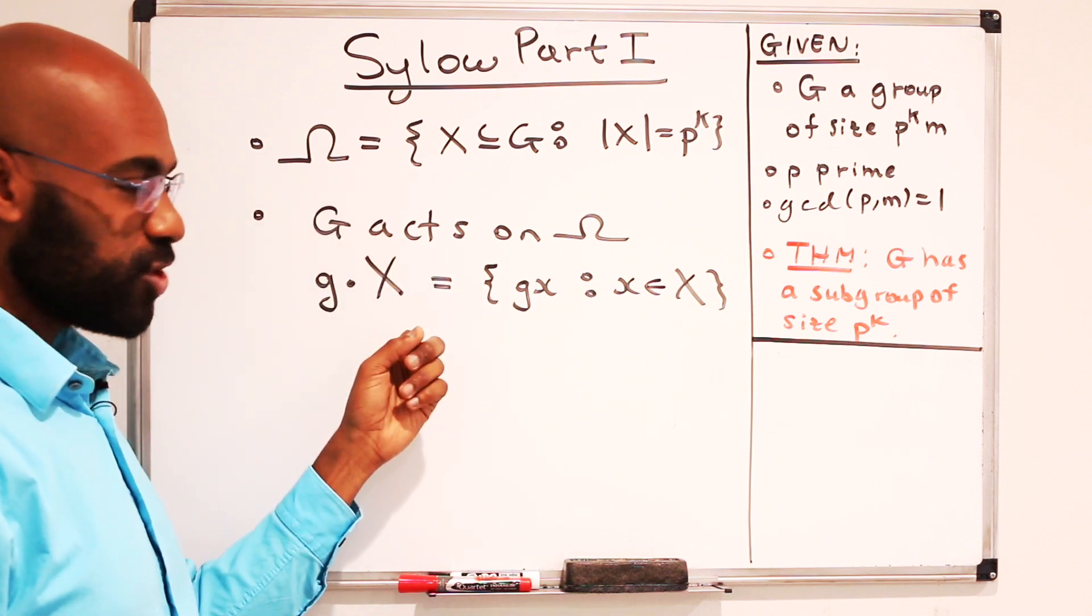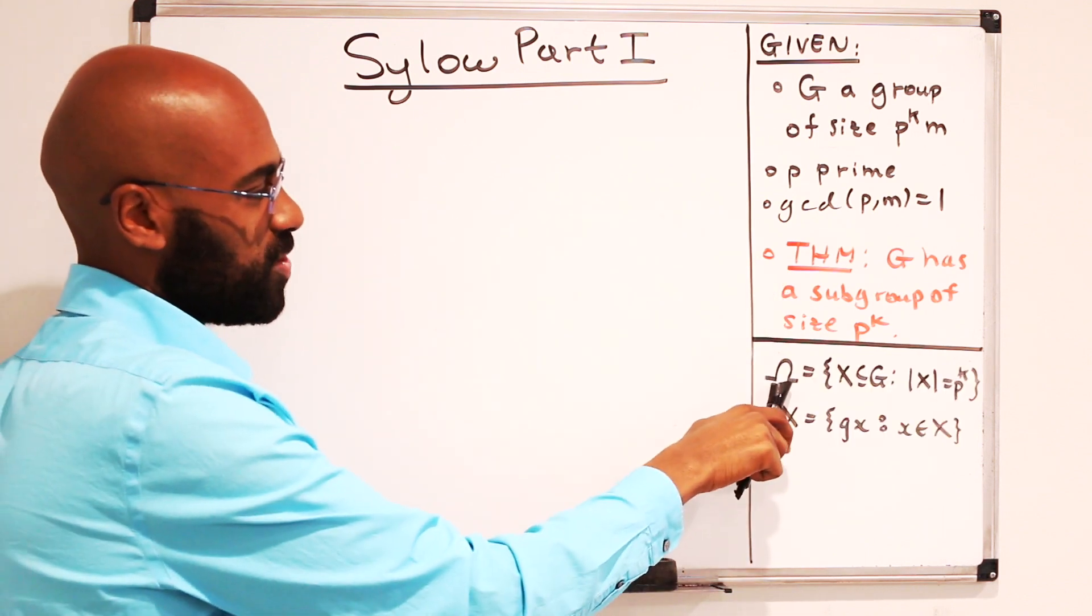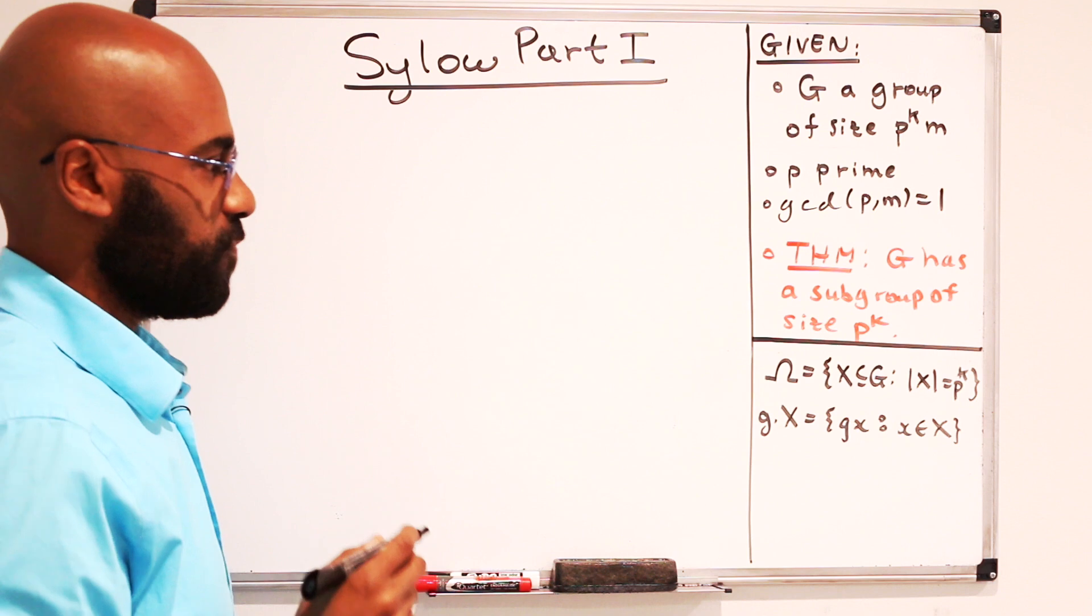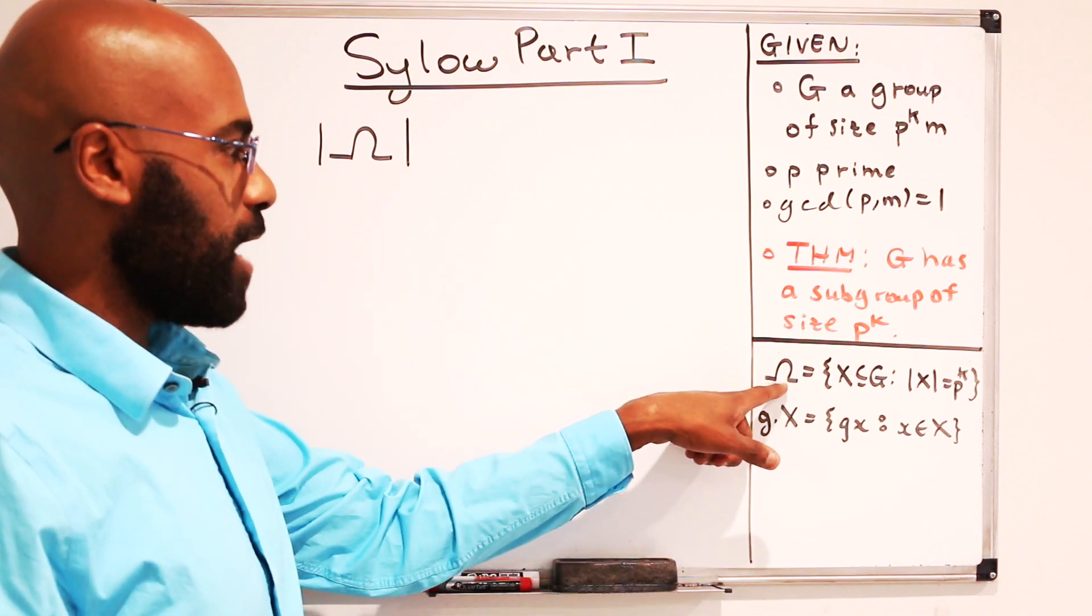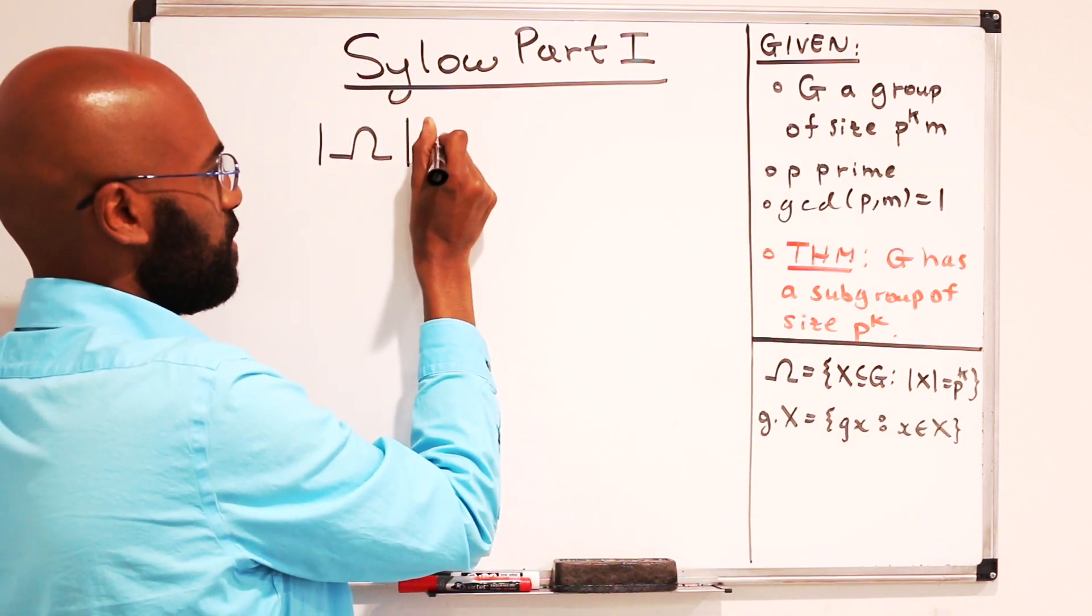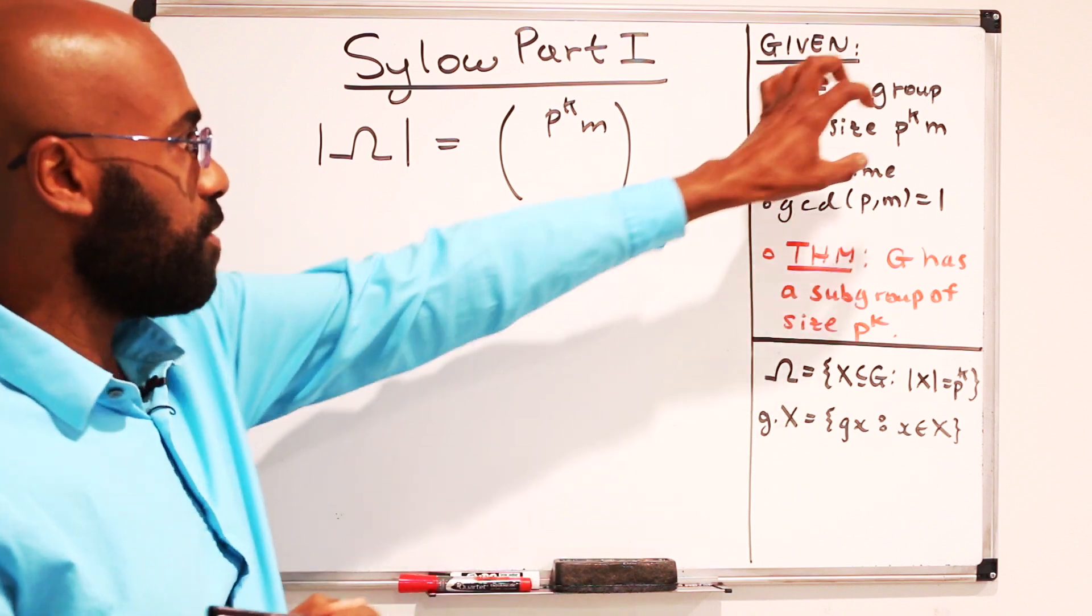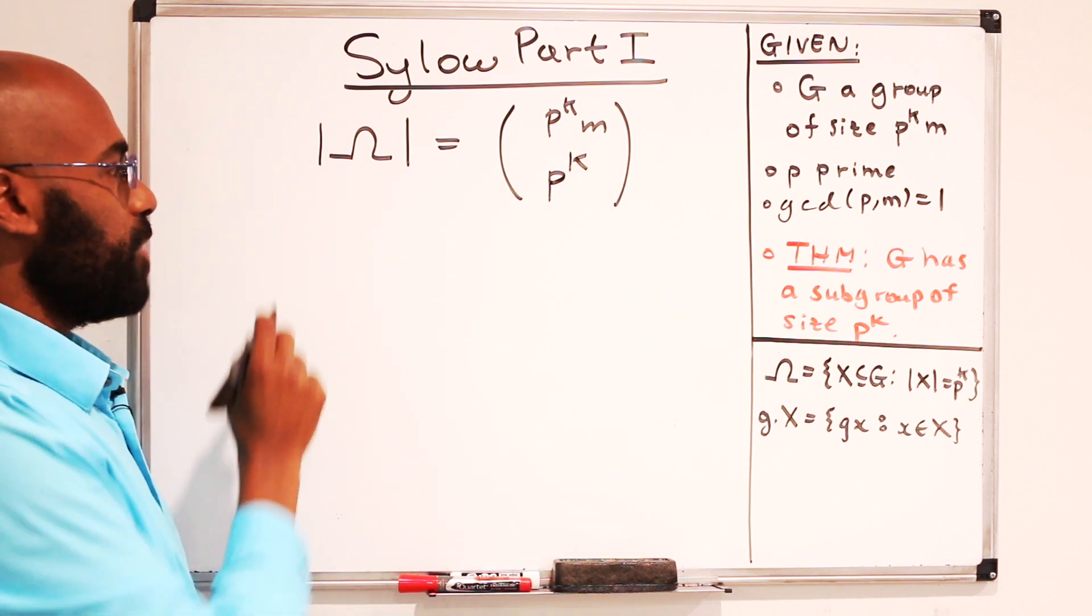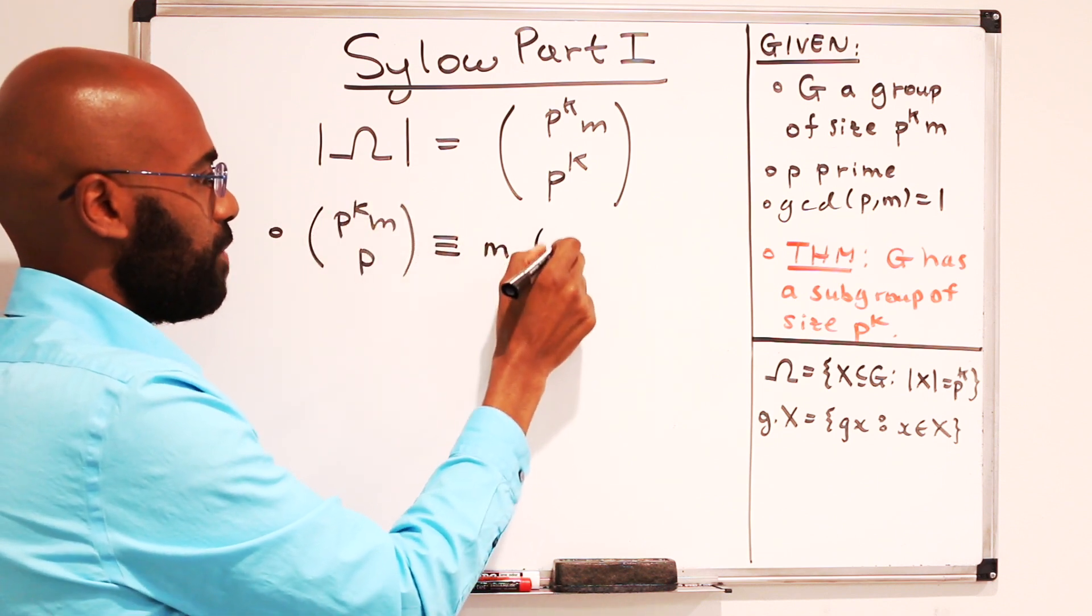So we have a set and a group action. We're going to analyze this group action to hopefully find our subgroup of size p to the k. So now we have our set and our action that's given for every single g in our group. Let's analyze this for a bit. So first of all, let's look at the size of the actual set that we're acting on. So this consists of all the subsets of a certain size. The number of elements in our entire group is p to the k. So the number of elements here is the number of elements in the group, choose the number of elements we're choosing, which is p to the k.